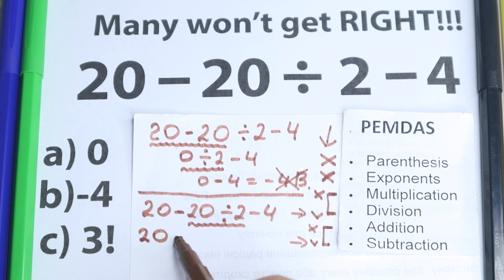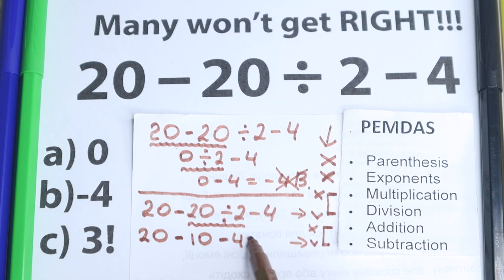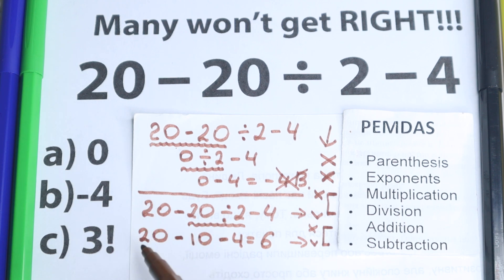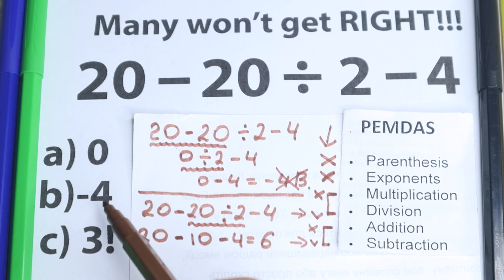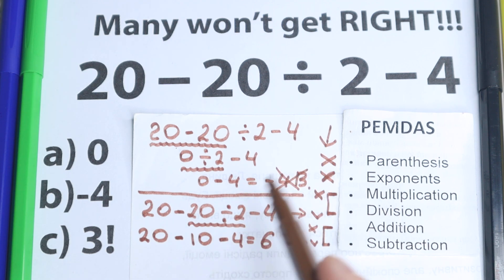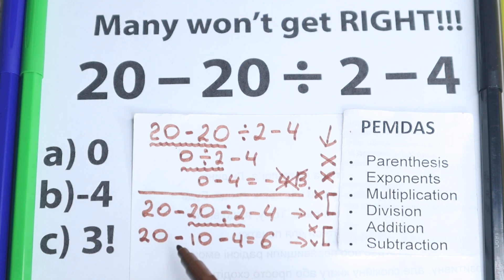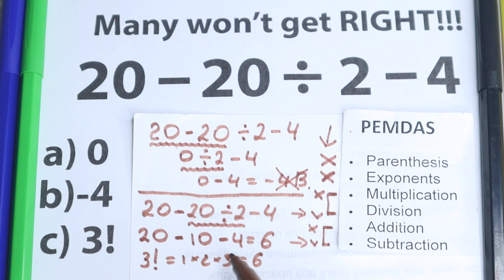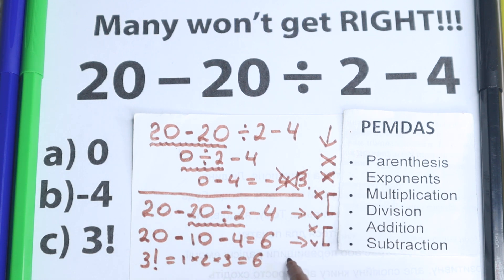So we have 20, and the first step is not subtraction — it's 20 divided by 2, which equals 10. Then 20 minus 10 minus 4 equals 6. But here is the very tricky moment: we don't have option 6 listed. Many students who get 6 correctly then go back to the wrong answer because they don't see 6. What we do have is 3 factorial — 3 factorial is the product 1 times 2 times 3, which equals 6. So the correct answer is 3 factorial, which is option C.